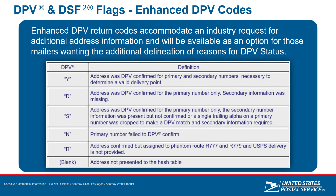DPV is the workhorse for any address-matching engine — this is where all your intel is really being derived from. All DPV codes will be made available to mailers upon request as an option. We are testing the Cycle O software to ensure they have the ability to return these codes if requested. All CAAS certified software has this feature available within their code upon request — it is an optional feature available by the customer of that vendor.